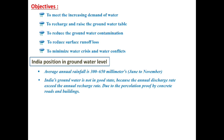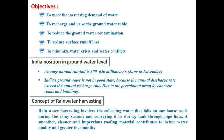As stated earlier, in India the annual discharge rate exceeds the annual recharge rate. This is because of the percolation-proof nature of concrete roads and buildings. In urbanized areas with more buildings, industries, and roads, water has no possibility of percolating into the soil — it entirely runs off to the nearby seashore or water reserve, so the groundwater level is depleted.